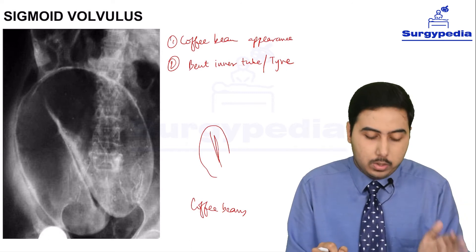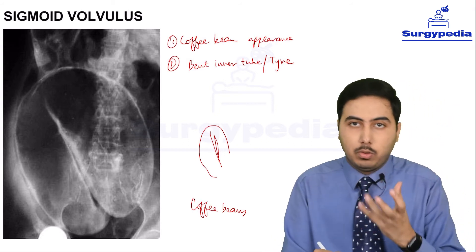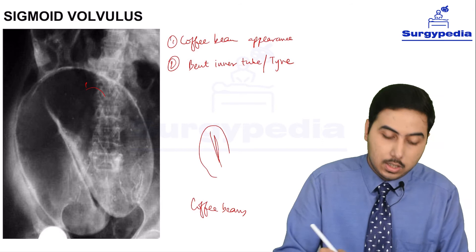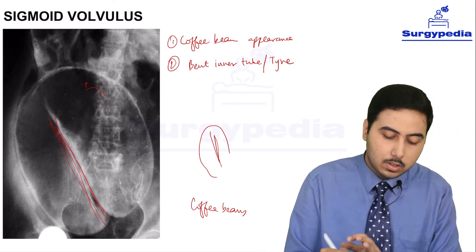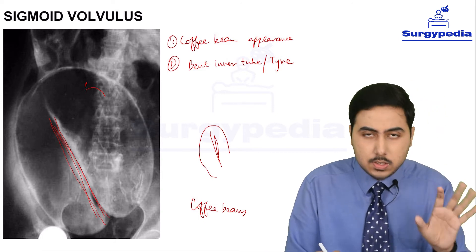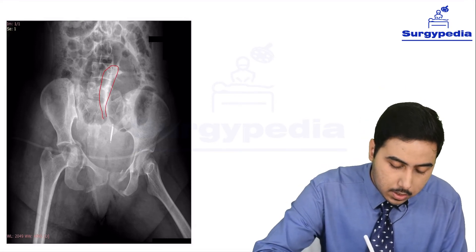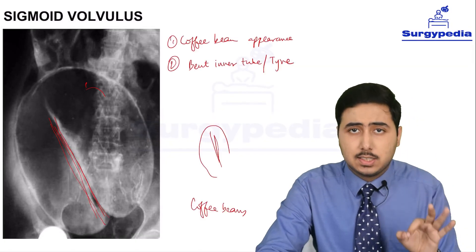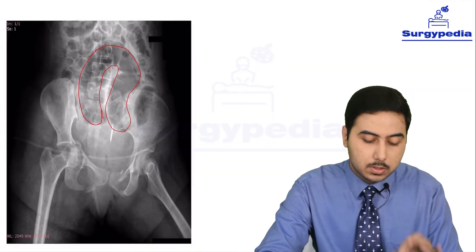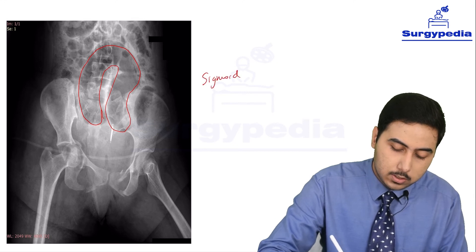Another thing to note in this image: the direction is like this. Sigmoid volvulus, when it rotates, it rotates in this direction - sort of in the anticlockwise direction. Just keep this in mind. Let us have another look at sigmoid volvulus. In this second image, you can also see the bent inner tube or coffee bean shape. This is also sigmoid volvulus, just like the previous classical image.